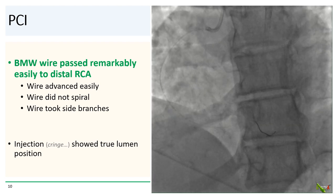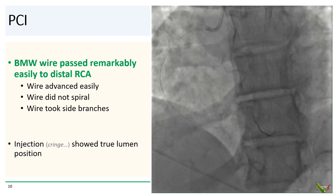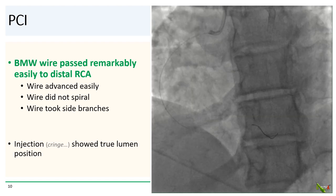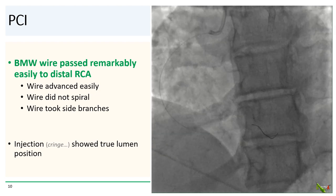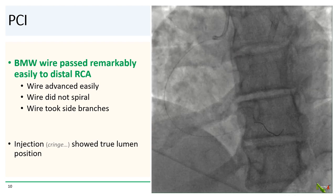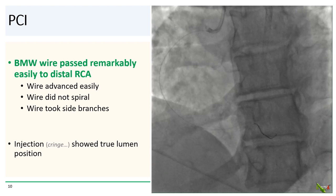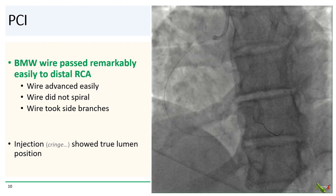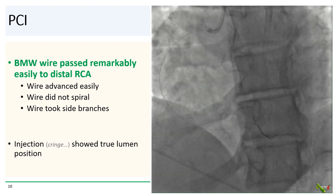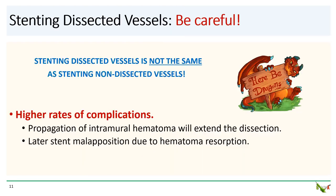Back to our patient. Miraculously, a BMW wire passed fairly easily to the distal RCA. The wire advanced easily, did not spiral, and took side branches very easily. Although there were no collaterals for contralateral injections, we were fairly certain that we were in the true lumen. As we discussed, contrast injection should be avoided as much as possible, but we thought it was necessary here to confirm our wire position. The injection confirmed our wire was indeed in the true lumen.